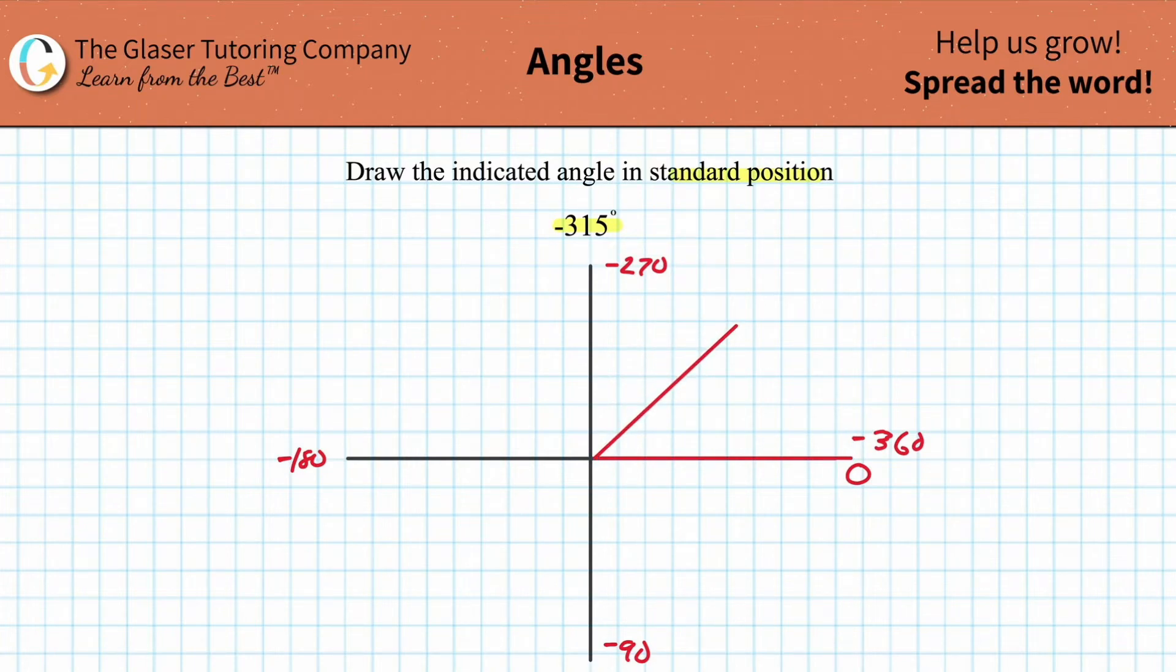That represents a negative 315 degree angle. From 270, this is about 45 degrees over. You can do the math: take 315 and subtract 270, you get 45. So this interior positive angle is 45 degrees.